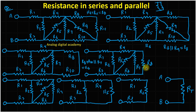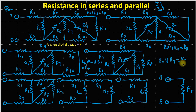R7 and R8 are in parallel, so we can calculate it: R8 parallel with R7 equals a result we assume as R7. The resultant of R8 and R7 is equal to R7. Now the parallel combination of these two gives us one equivalent resistance, R7.